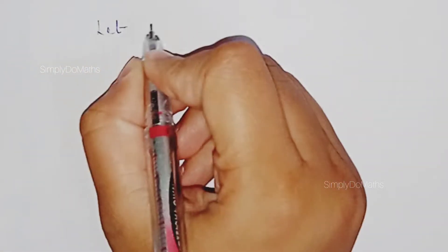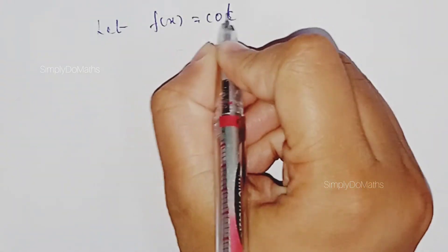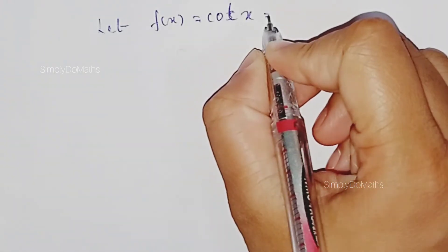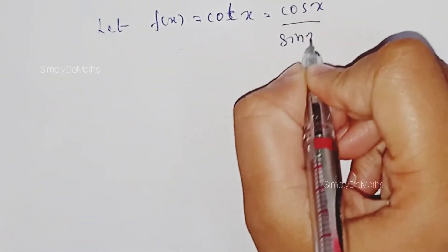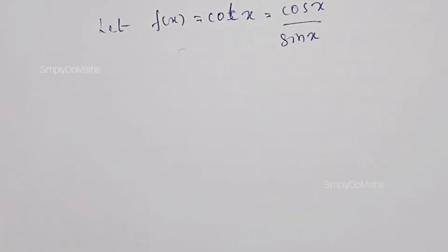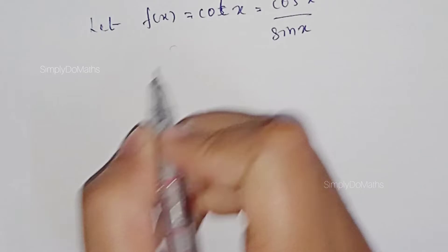Hello, in today's class let us learn how to find the derivative of cot(x) by the first principle method. Let us consider the function f(x) = cot(x). Cot(x) can be written as cos(x) divided by sin(x). This is the value of f(x).